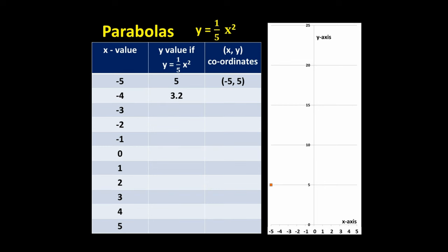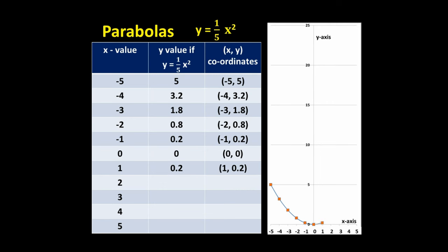One-fifth of negative four squared is 3.2, so the next point goes at (-4, 3.2). One-fifth of negative three squared is 1.8, so the next point goes at (-3, 1.8). If we continue plotting all these points, we end up with a flatter curve than the one we saw before, but this curve is also a parabola.